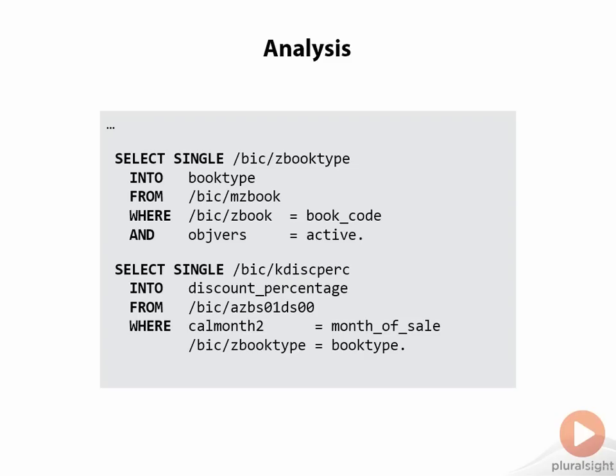Let's continue our code analysis with the SELECT statement. As you can see, we have used SELECT operations for getting the book type from the Bookmaster data and a discount percentage from the newly created DSO.